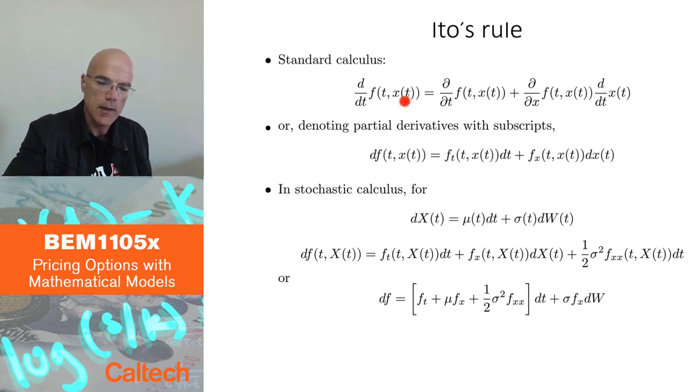Here I have something called x of t, and then I have a function of time and of x of t. Think of x of t for our purposes as the stock price, and think of f as the option price. So the option price is going to be a function of time, actually usually time to maturity, and of the current value of the stock price. If we know the dynamics of x of t, meaning we know the derivative of x of t with respect to time, can we say something about how f, the option price, changes with time?